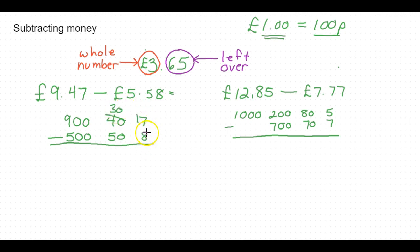So 17 subtract 8, you can do that, it's 9. Now we have 30 subtract 50, you can't do that, so we have to cross that out, make it 800, bring the 100 over here. Now we've got a hundred and thirty subtract 50. Well, we can do that, that's 80. And now 800 subtract 500 is 300.